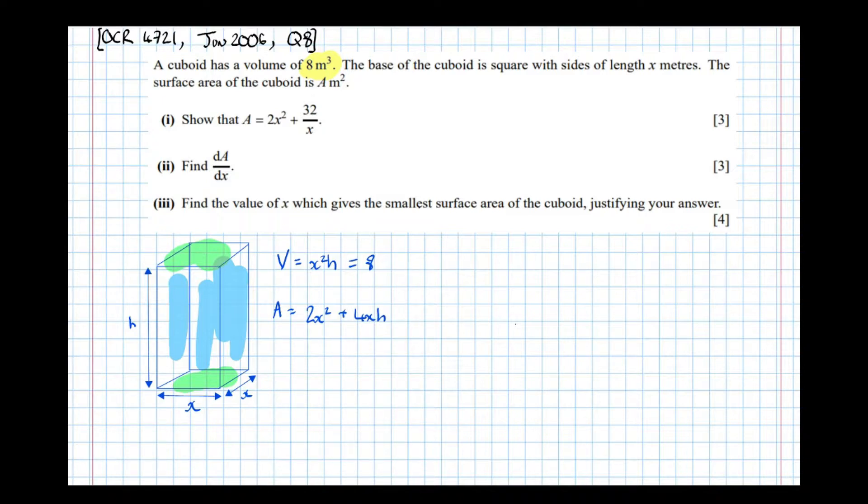Well, that's not the target expression we're given in the question. The question asked us to get 2x squared plus 32 over x. We've got this extra variable h which we need to eliminate. We can do that by going to the volume equation. We can rewrite that in terms of h. That means that h equals 8 over x squared. And if we then sub this into there, we get A equals 2x squared plus 4x times 8 over x squared, which equals 2x squared plus 32 over x when simplified. And that's exactly what we're asked to show.